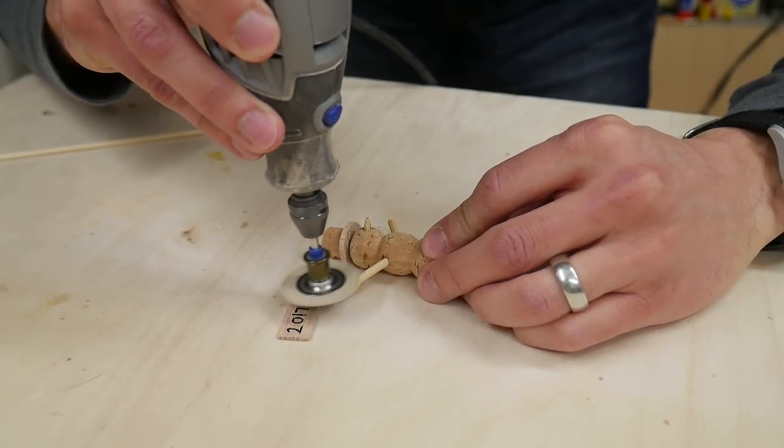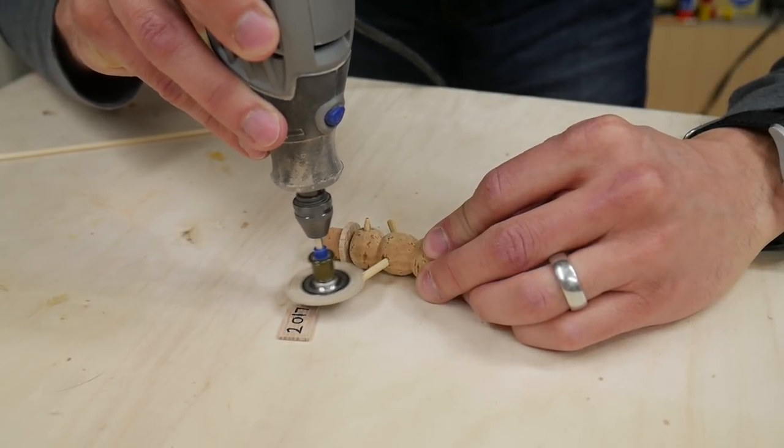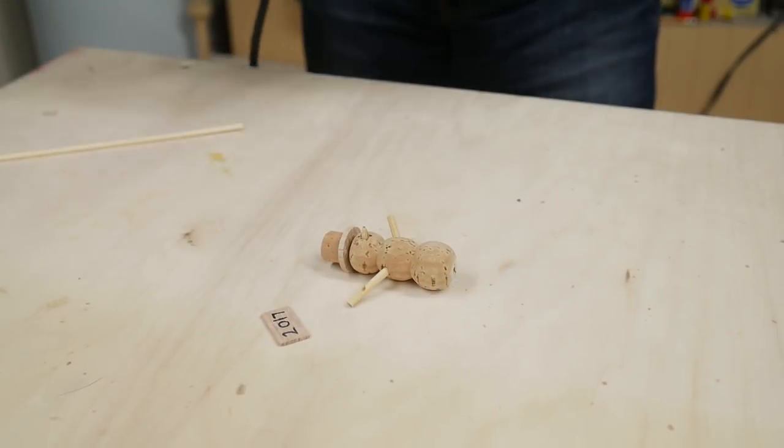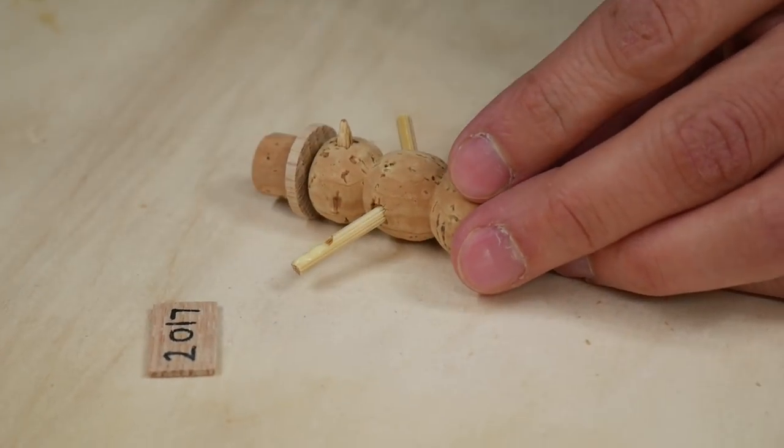After the glue had dried, I used a sanding disc on my Dremel rotary tool to sand a flat spot on the end of one of the arms. Then I glued the sign to this flat spot.